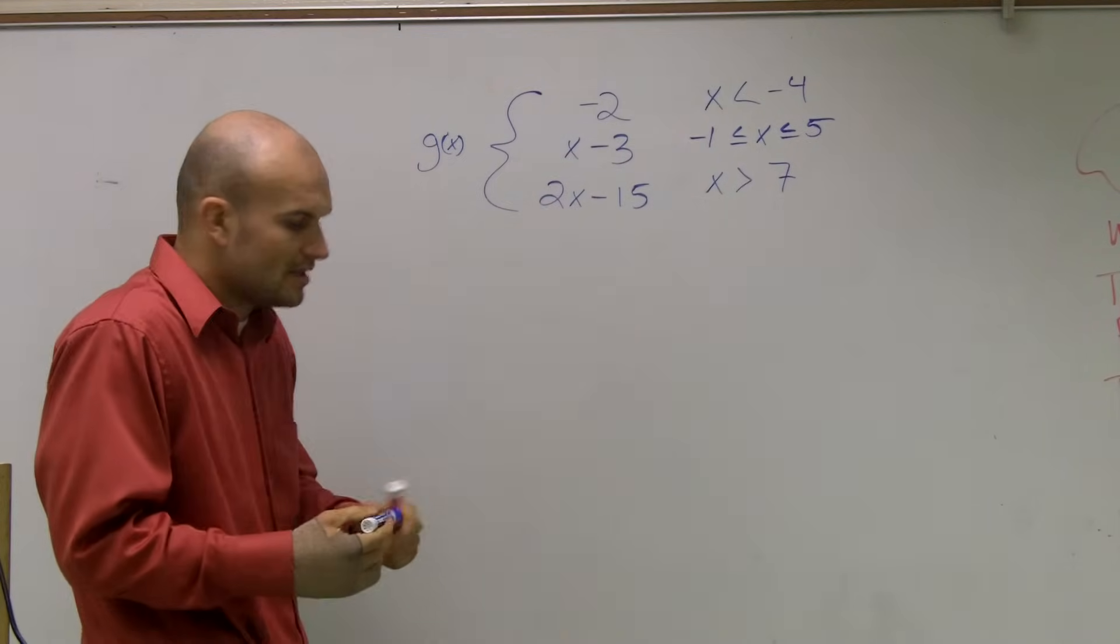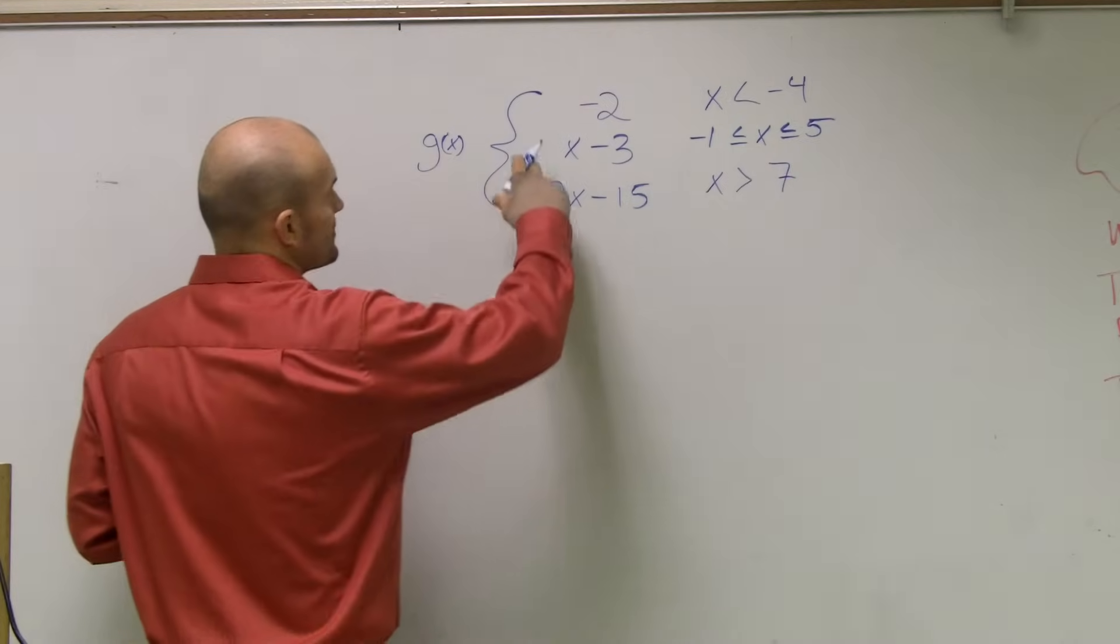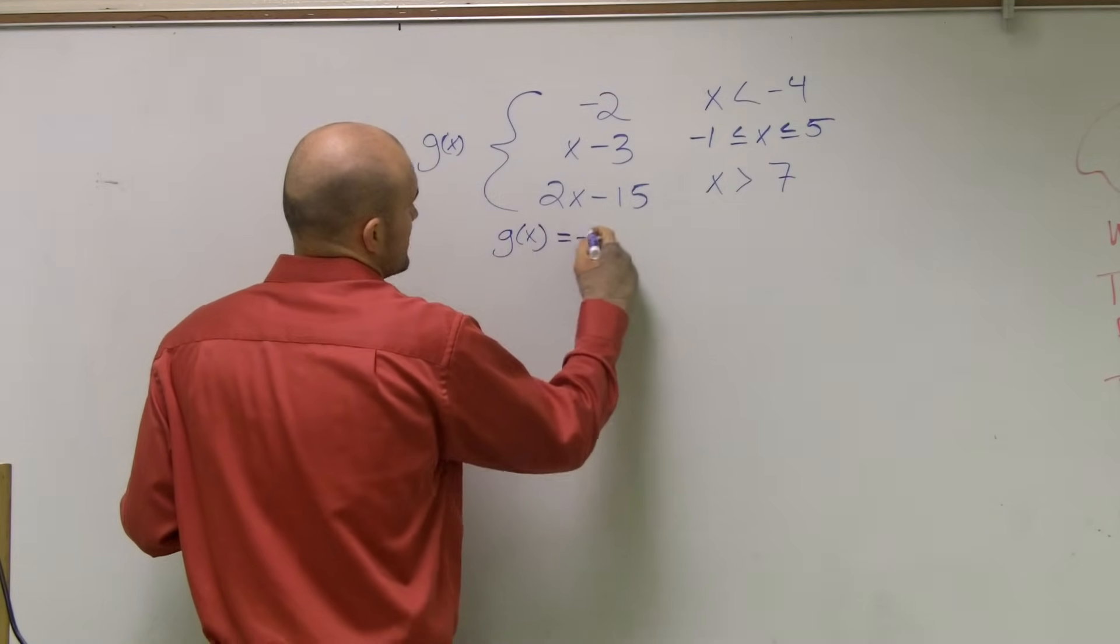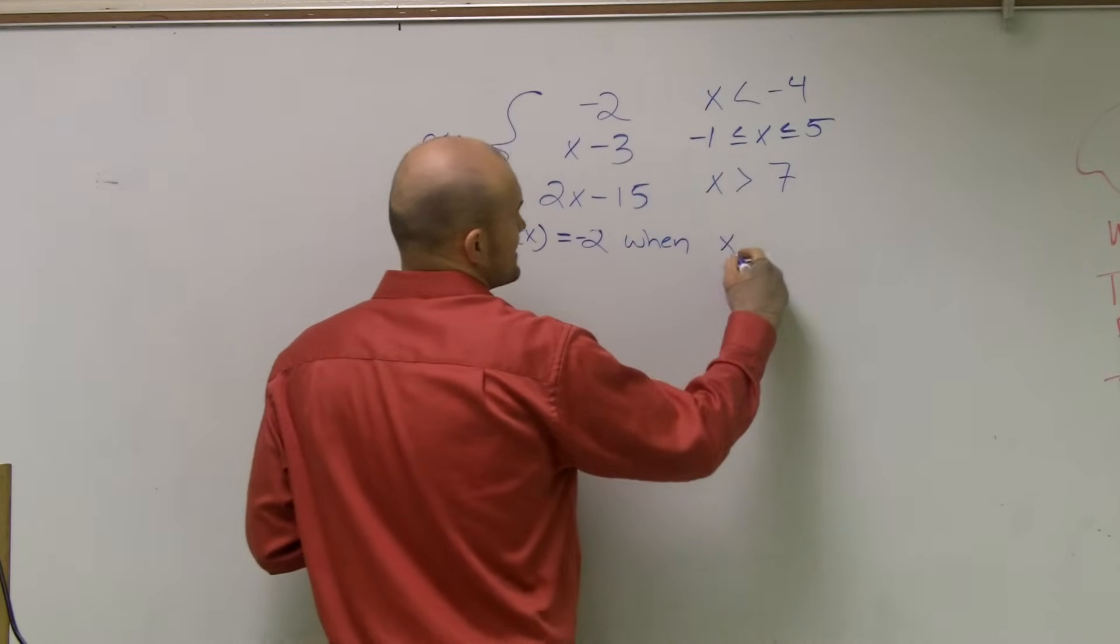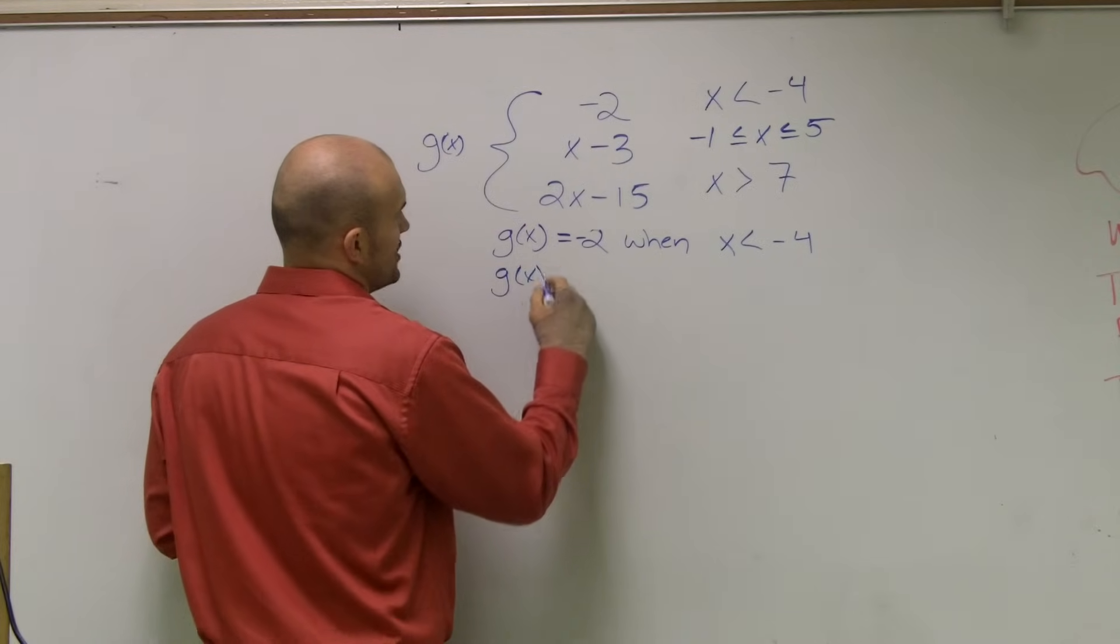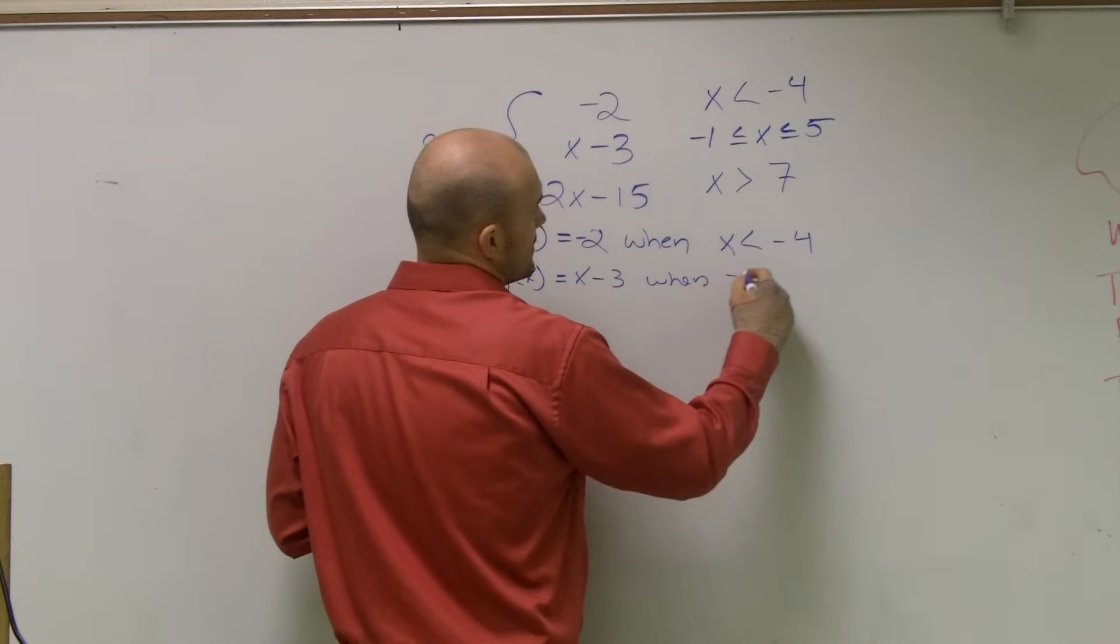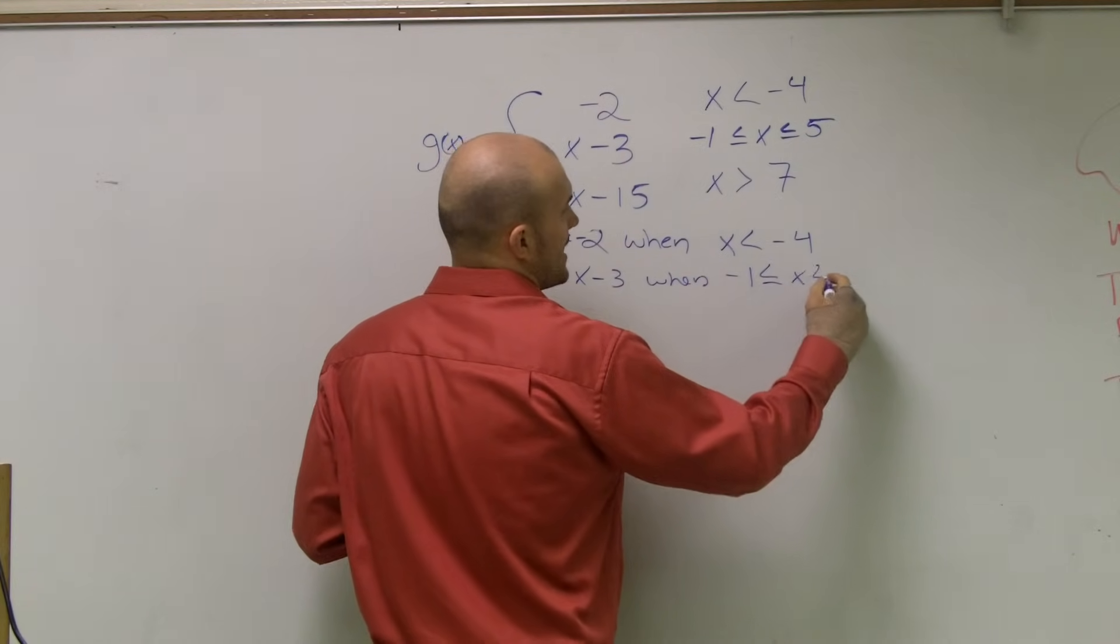So primarily what they really want us to do when they're graphing a piecewise function is they want us to graph the function g of x of negative 2 when x is less than negative 4. They want us to graph the function g of x equals x minus 3 when my x values are between negative 1 and 5.